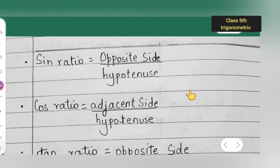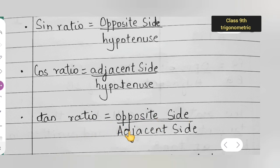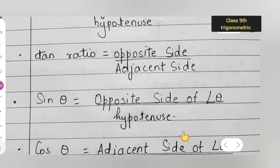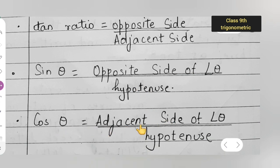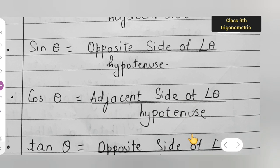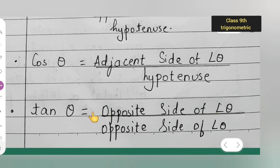These are very important formulas which you all have to know. The given exercises will be based on these. Sine ratio is opposite side upon hypotenuse. Cos ratio is adjacent upon hypotenuse. Tan ratio is opposite side upon adjacent side. Sin theta equals opposite side of angle theta upon hypotenuse. Cos theta equals adjacent side of angle theta upon hypotenuse. Tan theta equals opposite side of angle theta upon adjacent side.